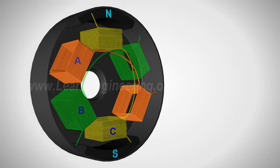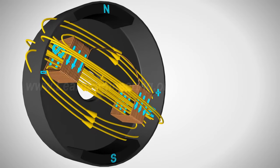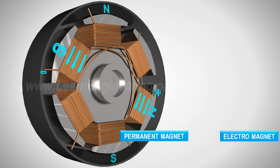By applying DC power to the coil, the coil will energize and become an electromagnet. The operation of a BLDC is based on the simple force interaction between the permanent magnet and the electromagnet.